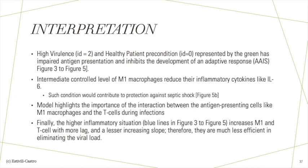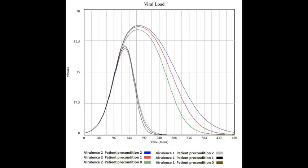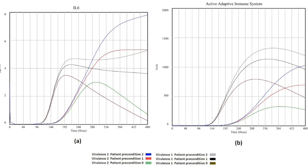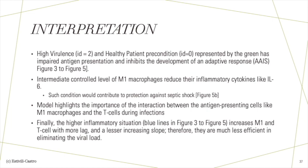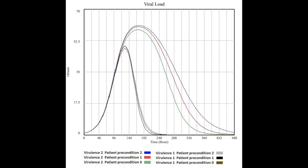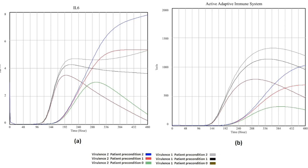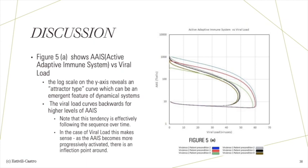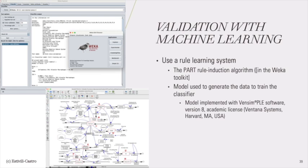Viral load is significantly less if the virulence is less. The patient precondition has a significant effect in controlling IL-6, and the adaptive immune system reacts earlier for lower virulence. When visualising pairs of outputs, we observe that virulence is a determinant factor when controlling and eliminating viral load. Also, the patient precondition is critical to the prompt and effective response of the adaptive immune system. The simulation has immunological interpretations: high virulence (ID=2) and healthy patient precondition (ID=0), represented by the green line, has impaired antigen presentation and inhibits the development of an adaptive response. An intermediate controlled level of M1 macrophages reduces their inflammatory cytokines like IL-6, which would contribute to protection against septic shock. The higher inflammatory situation — blue lines in figures 3 to 5 — increases M1 and T cells with more lag and a lesser increasing slope, making them much less efficient in eliminating the viral load.